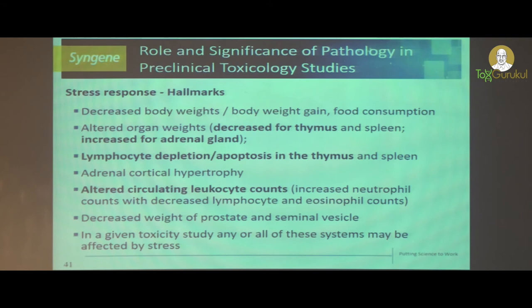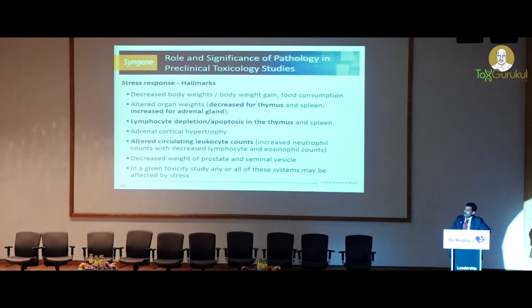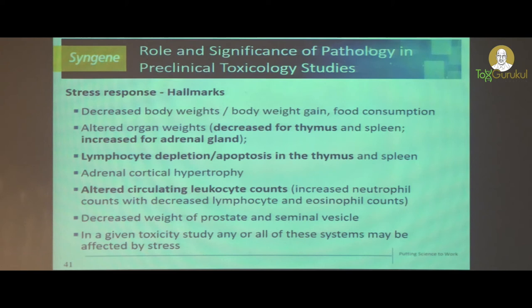We can often see decreased weight of reproductive organs, especially accessory sex glands in males and uterus weight in females. If there is very severe reduction in body weight, the reproductive function shuts down. As a result, you can see atrophic changes in the reproductive organs. These are all not considered adverse.